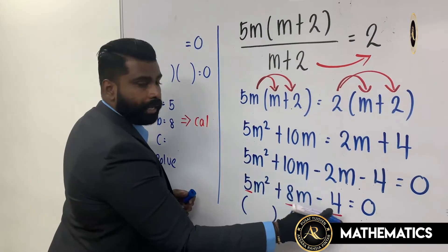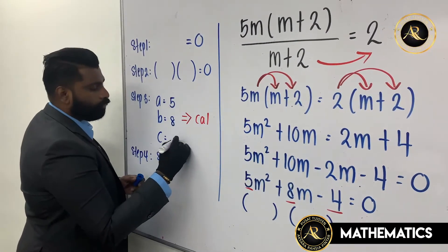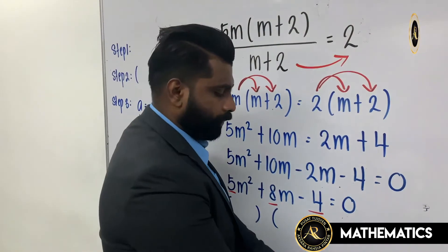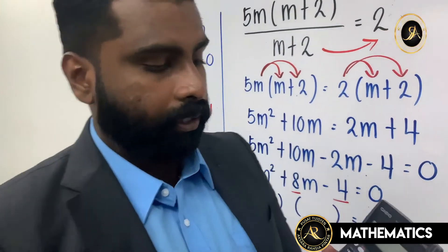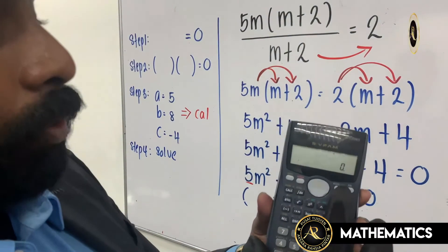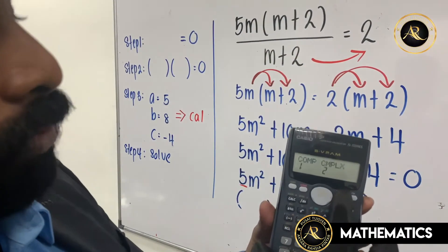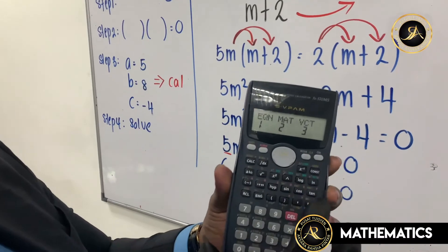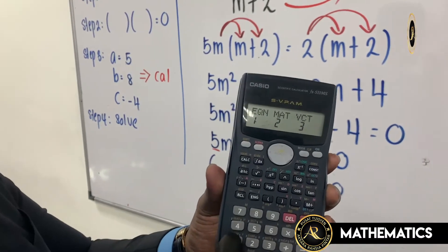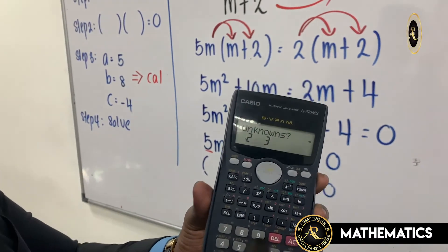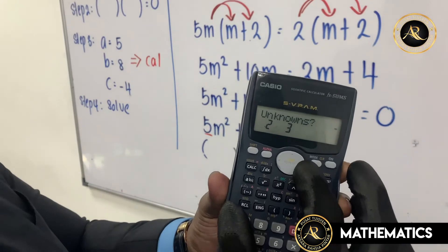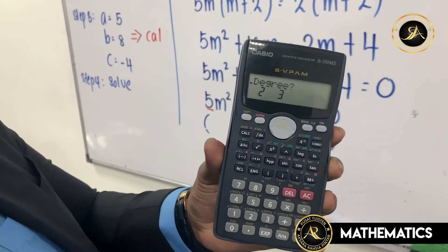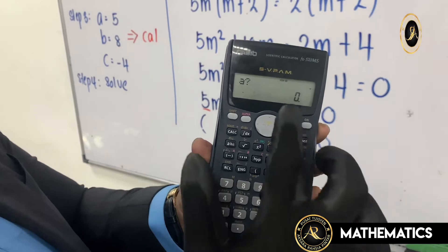Now we use the calculator. Press the MODE button one time, two times, three times — press it three times. Then press number 1. Then press the right-hand side button where you can see degree 2 and 3, and press number 2.